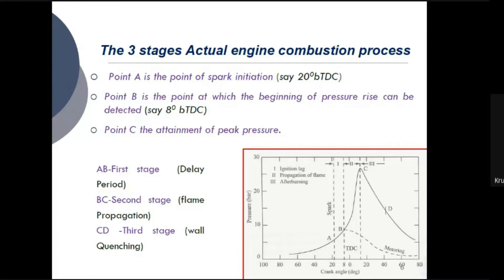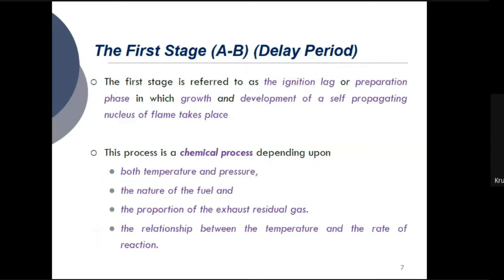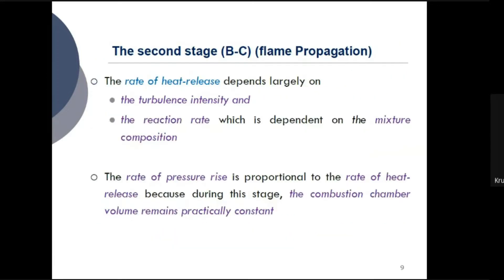We divided the whole combustion process of the petrol engine into three different stages. Stage 1 is the ignition lag, Stage 2 is the propagation of flame, and Stage 3 is after-burning. The spark happens at point A, which is called the advanced spark or ignition advance or delay period. Then pressure rises inside the cylinder, and after-burning begins. These are the three stages of SI combustion.